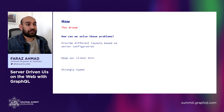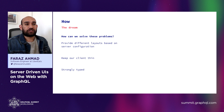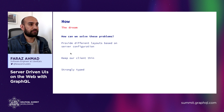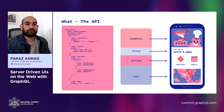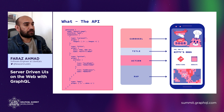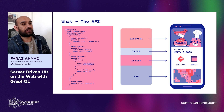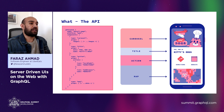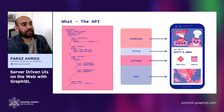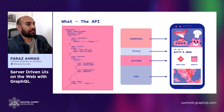We want to provide different layouts based on server configuration, keep our client really thin so it doesn't have to do too much logic to figure out what to display, and it would be nice if it was strongly typed. This brings us to server-driven UI. Here's an example API response: basically you make a query to get a layout and it's going to return the page and the platform that you're on. The interesting part is it's going to show the list of components that you should render on this page in order with their corresponding props. So what you get is an entire layout driven from the GraphQL server — it'll tell you to render the carousel, the title, the action, and the map, and that will build your UI.